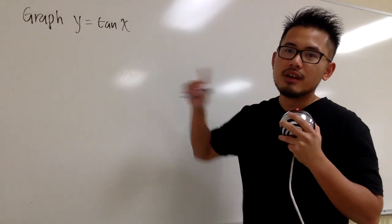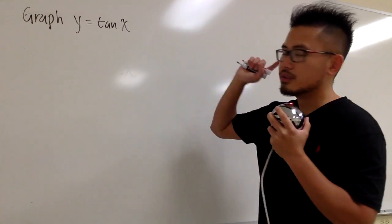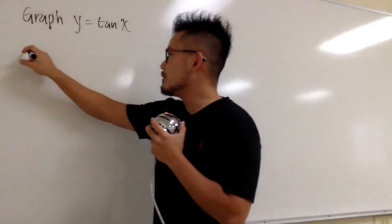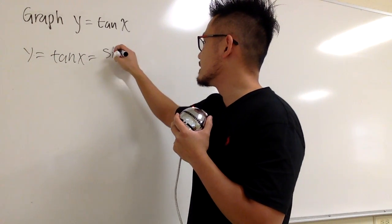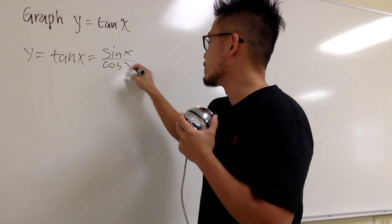Anyways, let's look at this one. First, we are going to find the domain of just tangent x, and we have to know a few things. First, we know that tangent x is the same as sine x over cosine x, right?